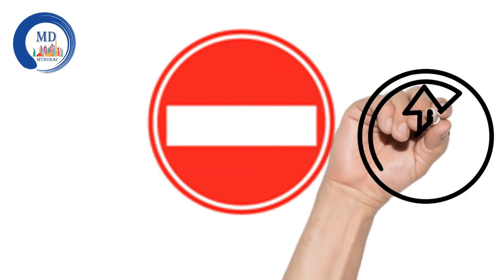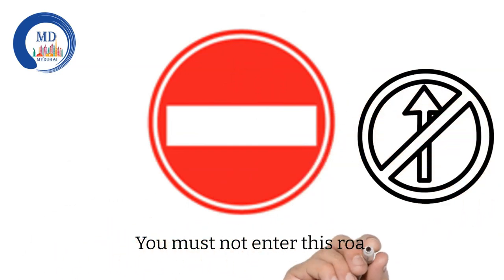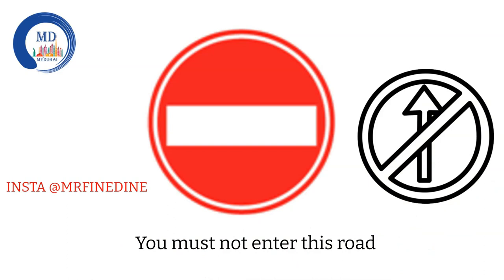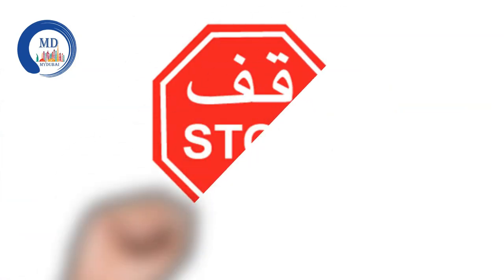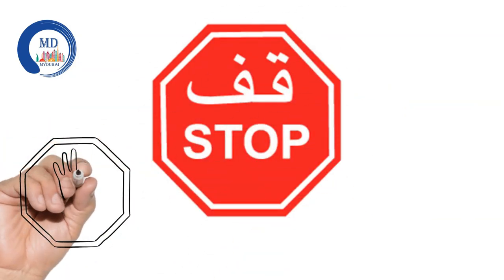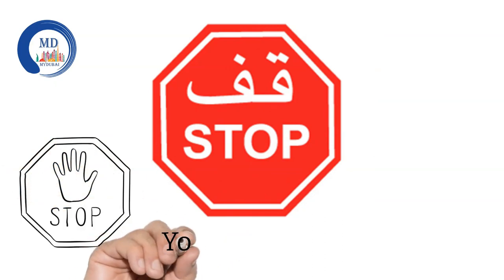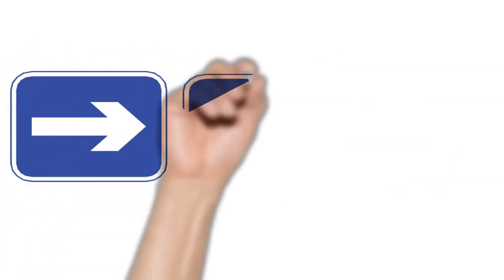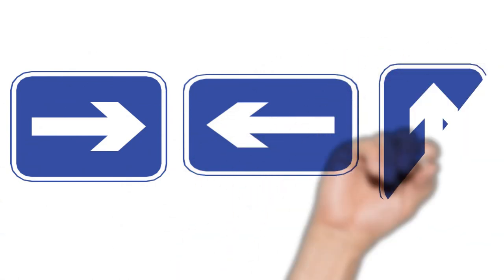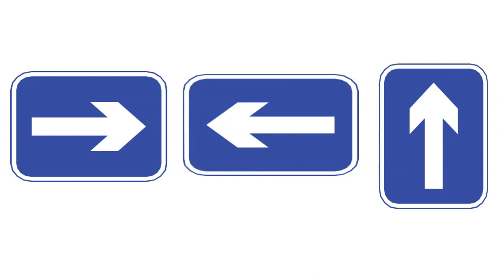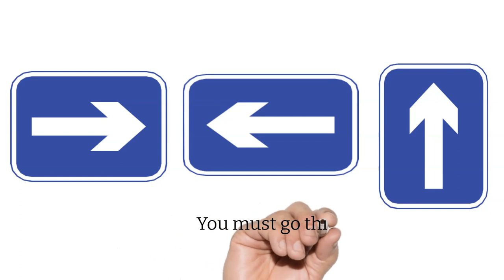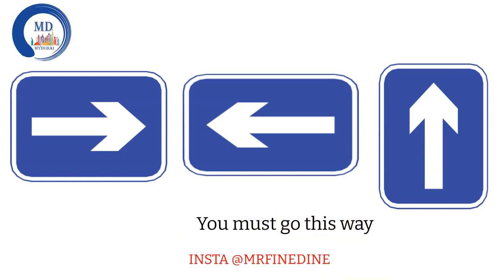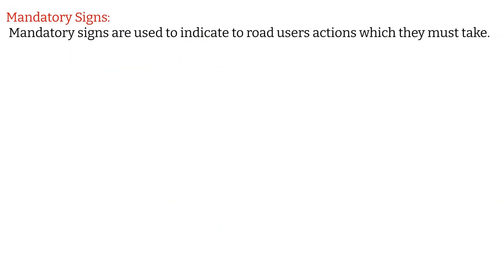That is a no entry sign, which means you must not enter this road. And that is the stop sign — if you are driving and you see this sign, you need to stop your car no matter what. The blue background with a white arrow gives you the direction which you must follow — you don't have any other options — so this sign means you must go in the direction of the arrow.